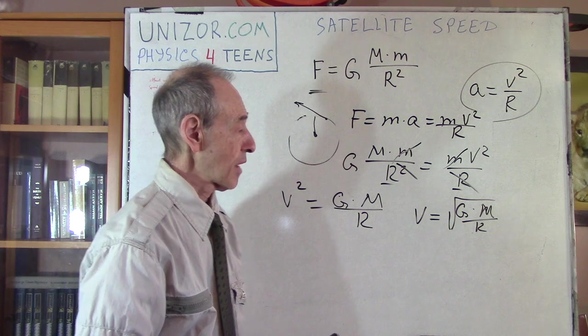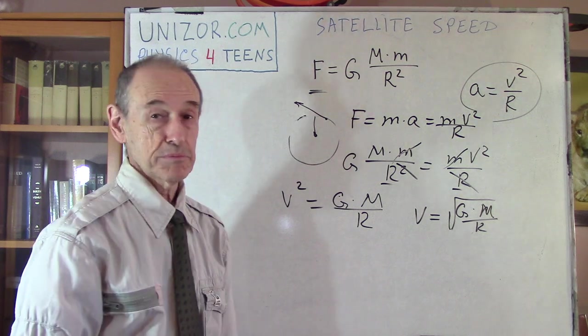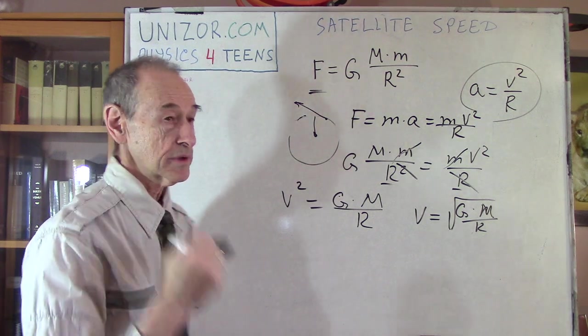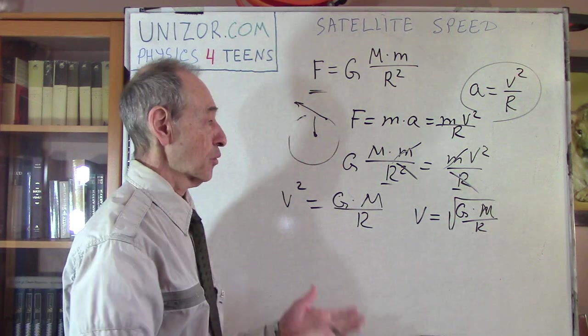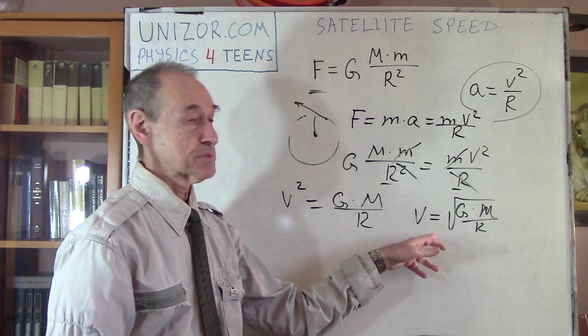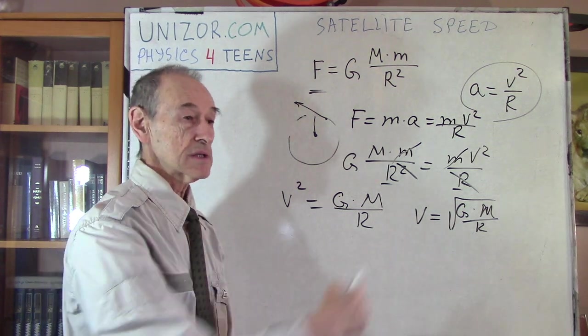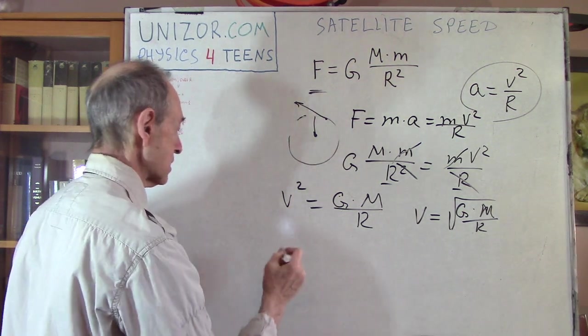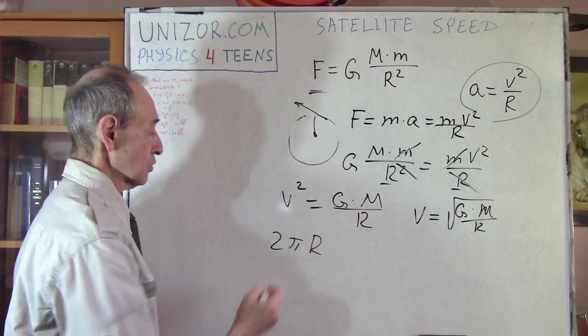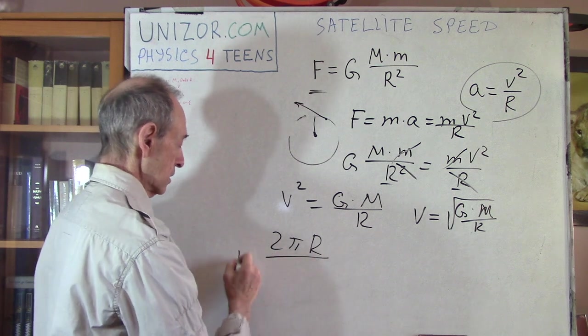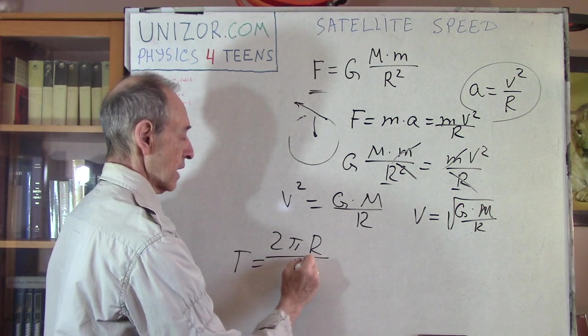What else can be derived from this? Well actually we can derive the period. Now period is the time it circulates around the planet. So what is the period? If we have the speed. Now the distance we also have. The distance is 2 pi r. Right? So we divide 2 pi r by speed.